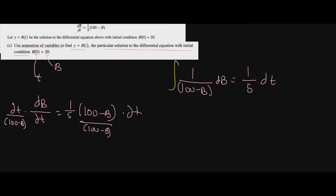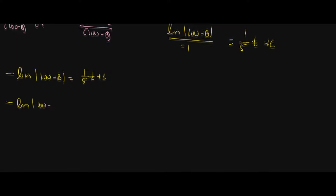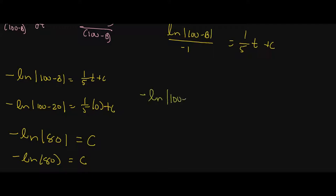Taking the antiderivative of both sides: the left side gives ln|100 - b|, but the derivative of the inside is -1, so we divide by -1, giving -ln|100 - b| = (1/5)t + C. Plugging in b(0) = 20: -ln|100 - 20| = 0 + C, so C = -ln(80). Substituting back: -ln|100 - b| = (1/5)t - ln(80).